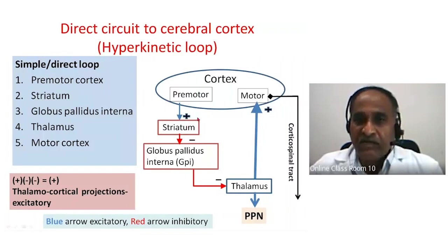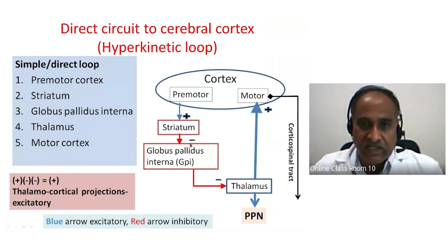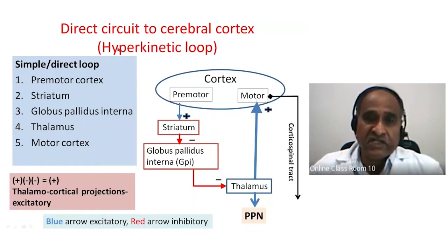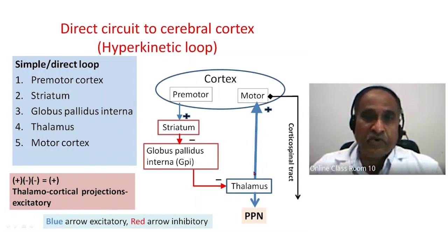In the direct path, there is an excitatory transmitter, then GABA (inhibitory), then GABA (inhibitory), then glutamate (excitatory). The product of plus, minus, minus, plus gives a net plus — meaning impulses reaching the motor cortex and pontopeduncular nucleus are excitatory, producing increased or hyperkinetic activity. That is why the arrow thickness is greater in the direct circuit.